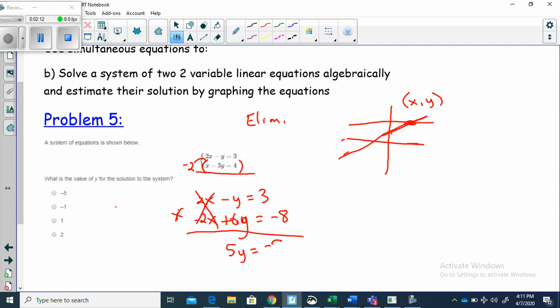If I divide both sides by 5, I get that Y is equal to negative 1.